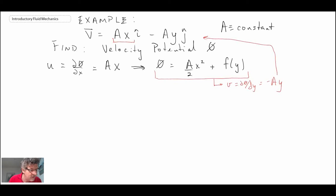So let's go ahead and do that. When we do that, the first term, the A over 2x squared, is zero, and then we have f of y. So all we have is the derivative of f with respect to y, and that is then equal to the v component of velocity for the velocity field we have, which is minus Ay.